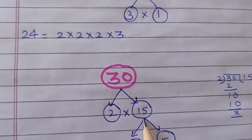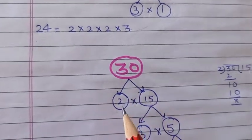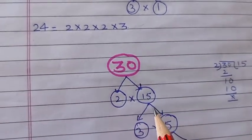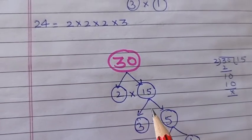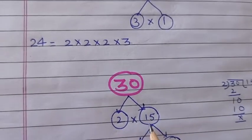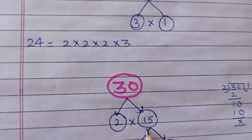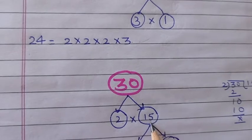We will split 15. Here we split 30 into 2 × 15. Here we will split 15. So, see, can 2 divide? No, because this is an odd number.